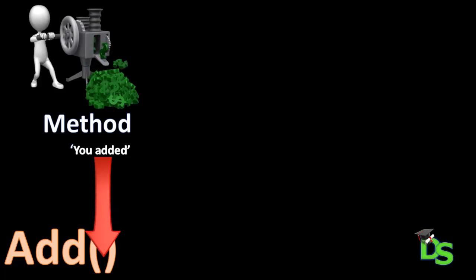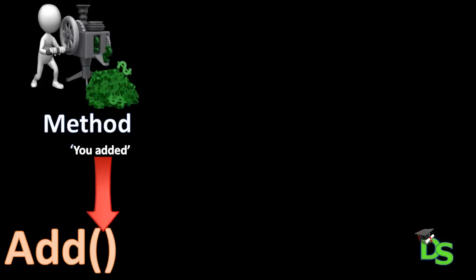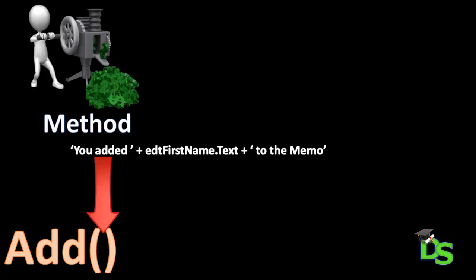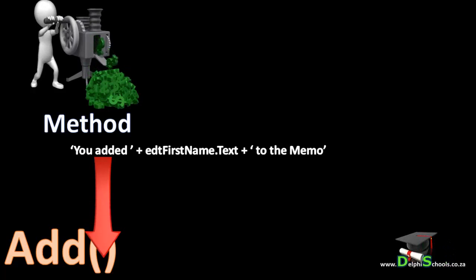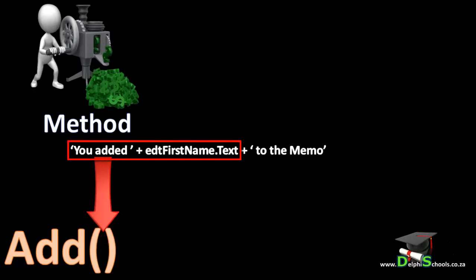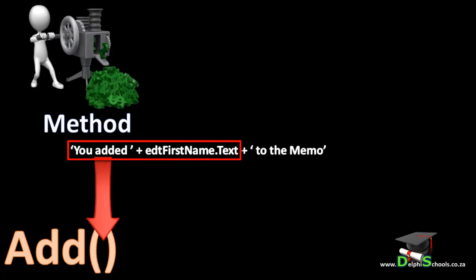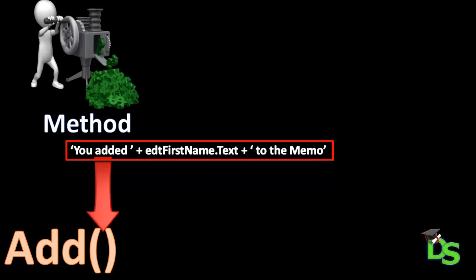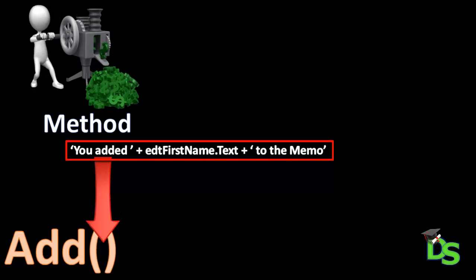The string value that you type between the brackets when calling the add method can also be a string expression. For example, you can add a string value that concatenates more than one string into a main string. There on the screen, I demonstrate how you can concatenate the value typed into an edit to the words 'you added', and then concatenate the words 'to the memo' to that phrase. If the text in EDT first name is my own name, then the string that I add will read: 'you added Gerard to the memo'.